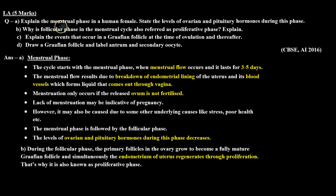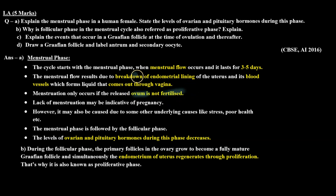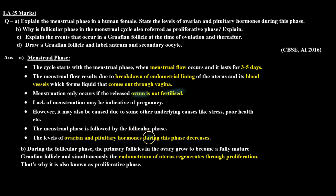A part mein humein menstrual phase explain karna tha. Toh menstrual phase human female ki menstrual cycle ka first phase hota hai jo start hota hai menstrual flow ke saath. Menstrual flow chalta hai 3–5 days tak aur usme endometrium ki lining break ho jaati hai aur blood vessels break ho jaati hain, aur dono degenerated corpus luteum ke saath vagina ke through bahar aa jaati hain. Menstruation sirf tab hota hai agar ovum ka fertilization nahi hota. Agar menstruation absent hai toh isko hum pregnancy ka indicative bhi maan sakte hain, par kisi kisi case mein poor health condition ya stress condition ki wajah se bhi absent ho sakta hai. Phir menstrual phase ke baad aata hai follicular phase. Menstrual phase mein ovarian aur pituitary hormones ka jo level hota hai woh decrease ho jaata hai, yani low level hota hai.